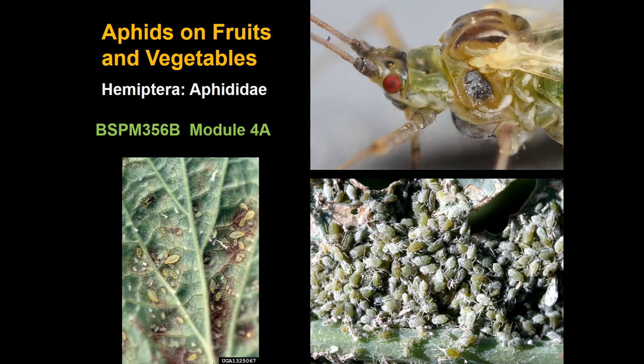We'll start with aphids — an important group that occurs on a wide variety of plants. There are a great many species. In my state we have about 350 native species, and a great many have been introduced from other countries. New species are found and brought into the country all the time.